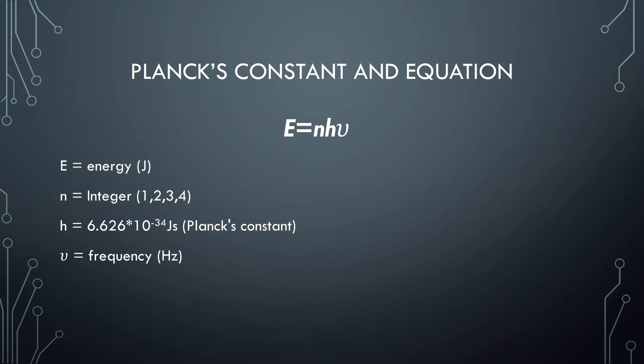So now we're going to talk about Planck's constant and Planck's equation. The equation that Planck came up with for black body radiation is E equals NHν where E equals energy in joules. N is a positive integer, which is what results in quantization. H is Planck's constant and it is 6.626 times 10 to the negative 34th power joules times seconds. And frequency, which is denoted by the symbol ν, is measured in units of Hertz.